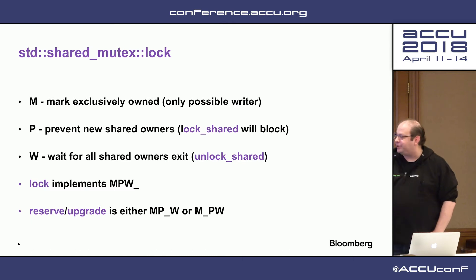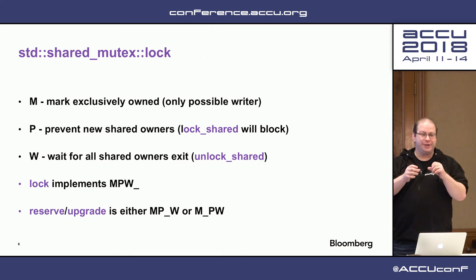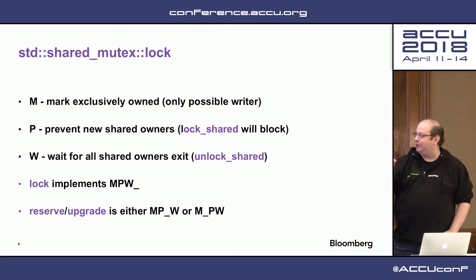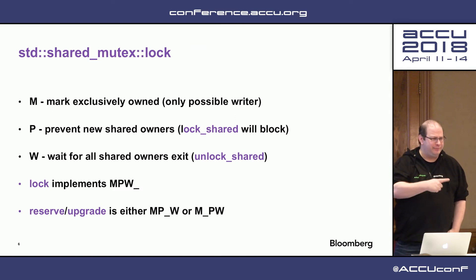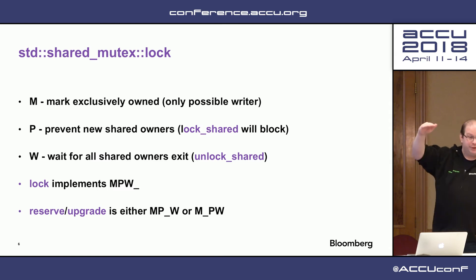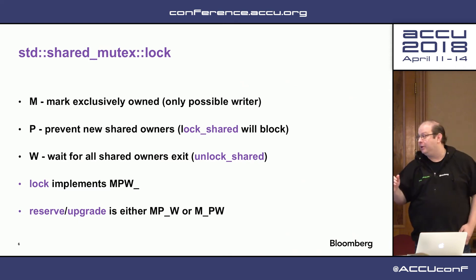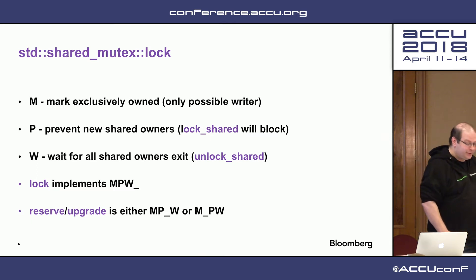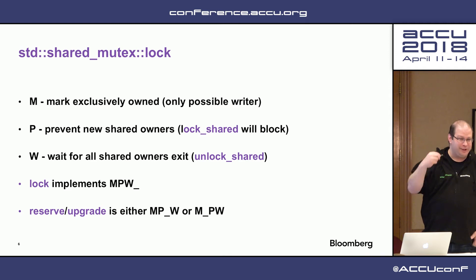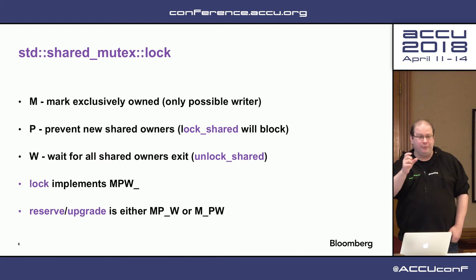I want to introduce some notation for later so I can name things appropriately — notation for the implementations as reserve underscore upgrade. A typical lock, which does everything at the reserve point, does all three steps right there and does nothing on the upgrade. Looking at these three steps, it's clear where I want to place them. The first one I want at the reserve statement. The wait is right before the upgrade is done. But where 'prevent new shared owners' should go is not immediately clear. Typical implementations put it with the first item, so the reserve marks exclusively owned and prevents new shared owners — typically as an atomic operation.